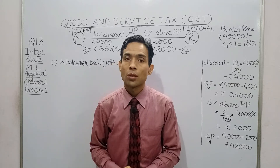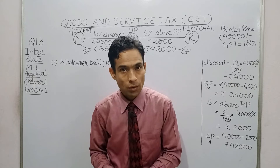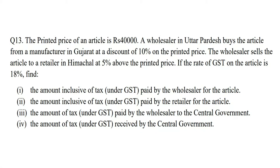This question is from interstate — it is question number 13, ML Agarwal, chapter number one, exercise number one. The printed price of the article is rupees 40,000. A wholesaler in Uttar Pradesh buys the article from a manufacturer in Gujarat at a discount of 10 percent on the printed price. The wholesaler sells the article to a retailer in Himachal Pradesh at 5 percent above the printed price. The rate of GST on the article is 18 percent. Find: first, the amount inclusive of tax under GST paid by the wholesaler; second, the amount inclusive of tax paid by the retailer; third, the amount of tax paid by the wholesaler to the central government; fourth, the amount of tax received by the central government.